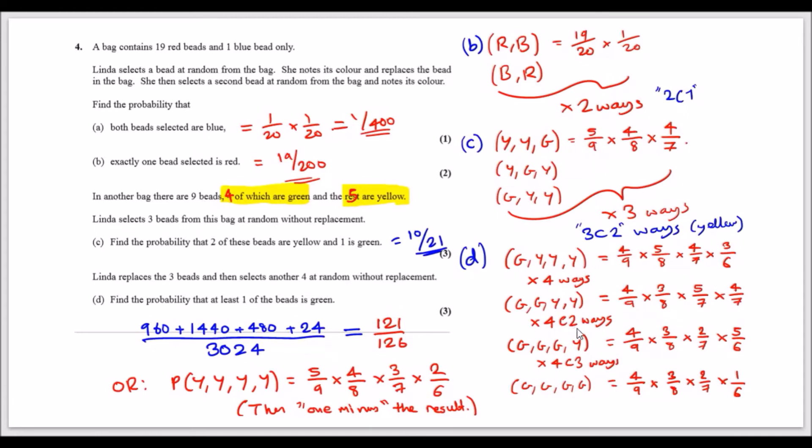You can say because you want one green, you could say four choose one green, and the calculator gives you four. When you do that, you can just list down the probabilities. The green would be four over nine.